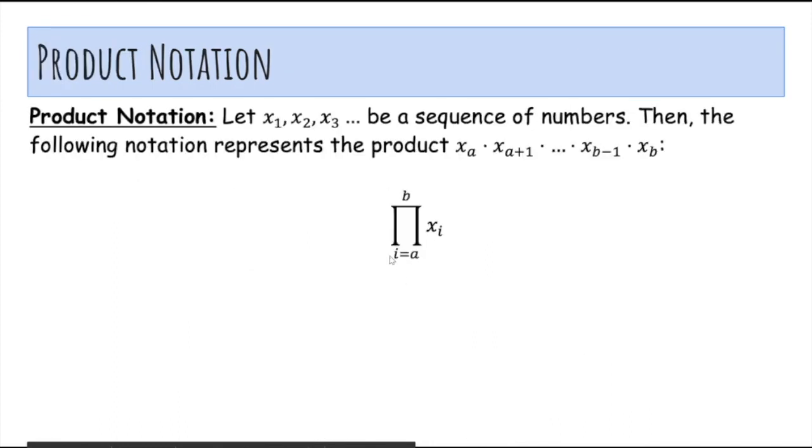Okay, so product notation is pretty much the same as summation, it's just that we multiply instead of adding. It's literally the same definition. So this same thing holds, so to get the product of x of a up to x of b, we just do product from i is equal to a up to b of x of i.